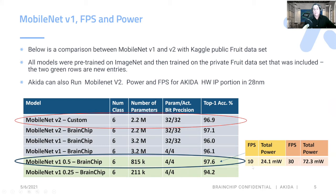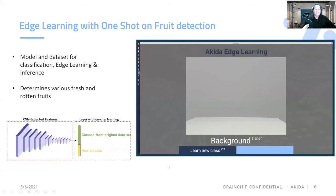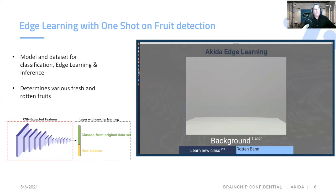Our frames per second is 10 with a total power of 24 milliwatts. And if you need a higher frame rate, you can go to 30 frames per second or even higher, but then your power will scale with that. As you can see with this demo, we're going to be adding in, with one-shot learning, all the fruit.